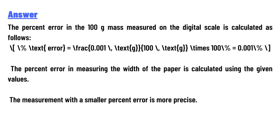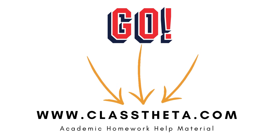The percent error in the 100 g mass measured on the digital scale is calculated as: percent error = (0.001 g ÷ 100 g) × 100% = 0.001%. The percent error in measuring the width of the paper is calculated using the given values. The measurement with the smaller percent error is more precise.